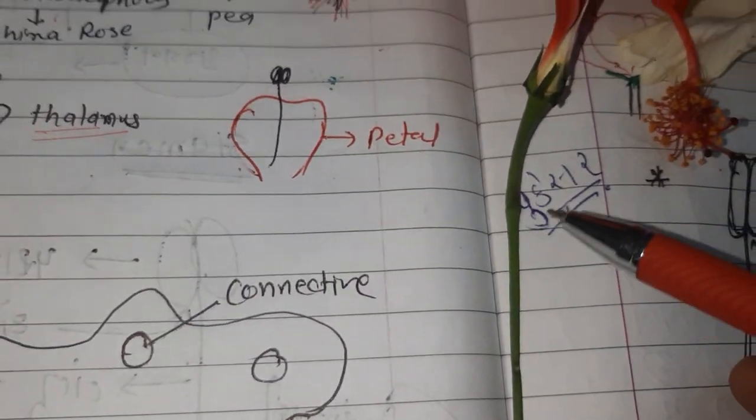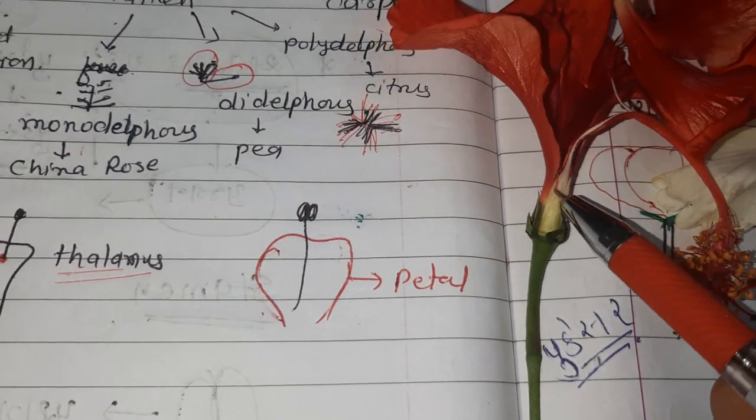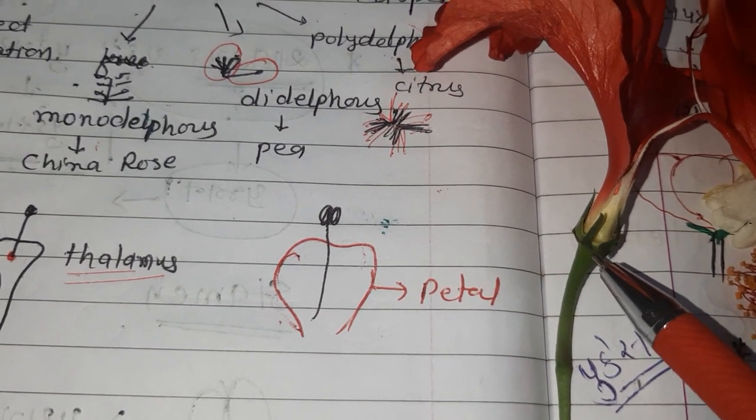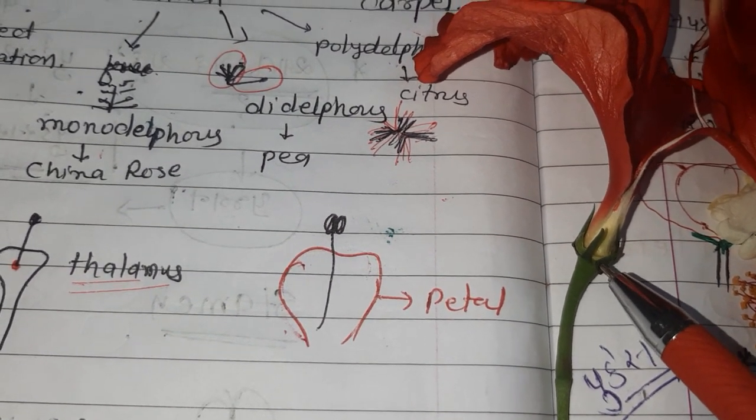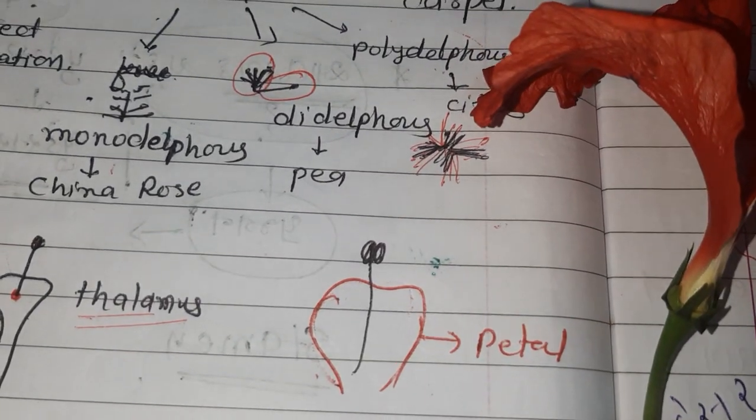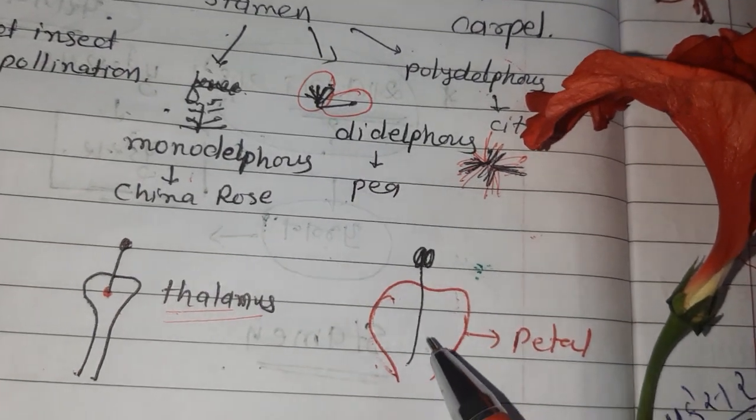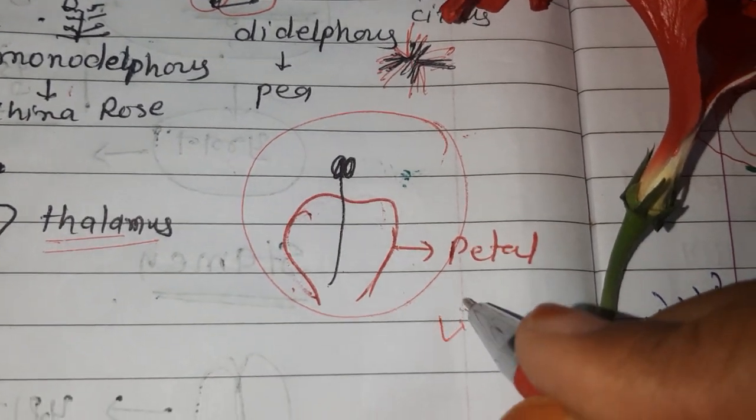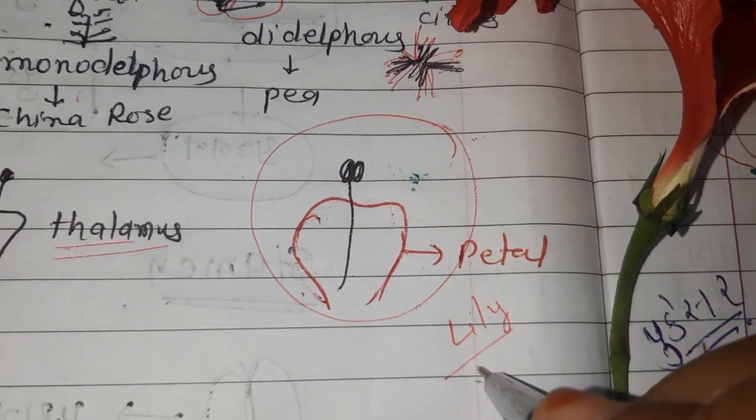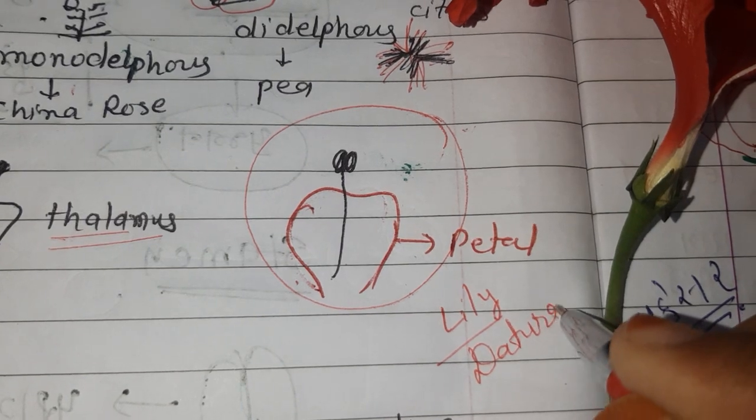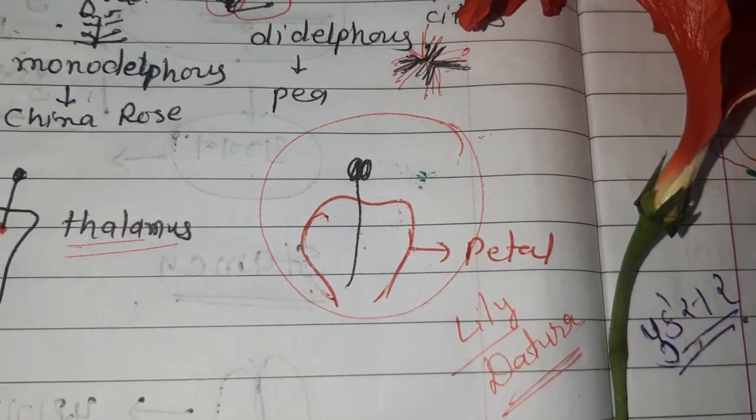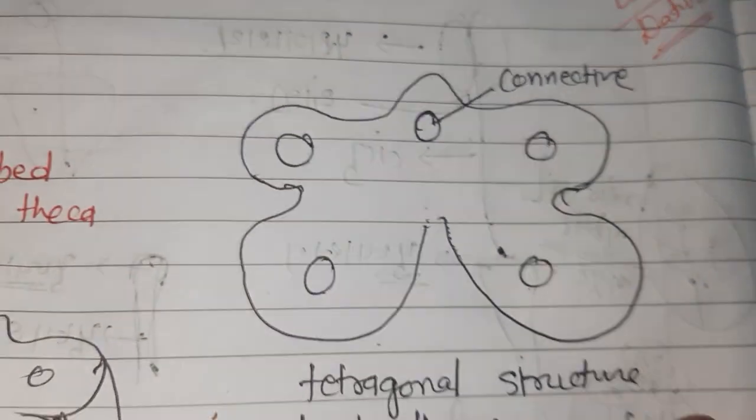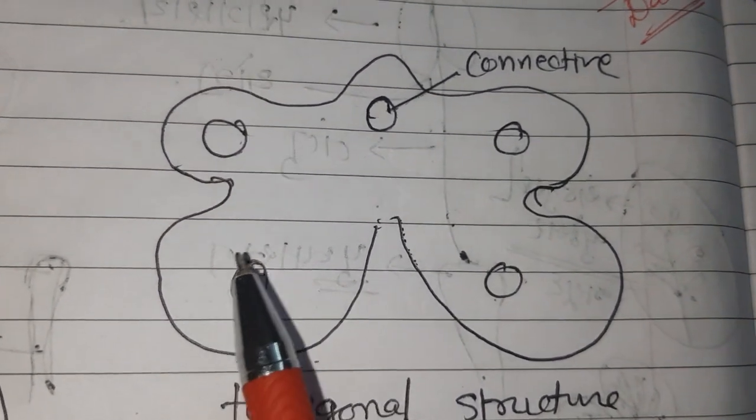Anther, filament, and connective. Now that filament may be attached with thalamus. What is thalamus? You can see here that flower, its all cycles are arranged on a swollen part. That is thalamus. Or that stamen may be united with petals. You have already seen in lily and even in Datura, stamens are attached with petals.